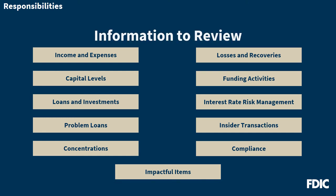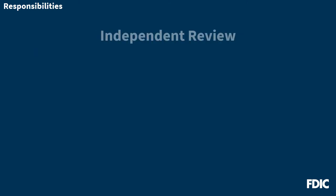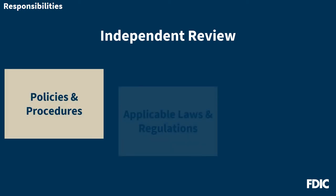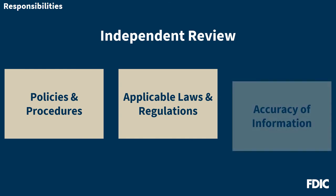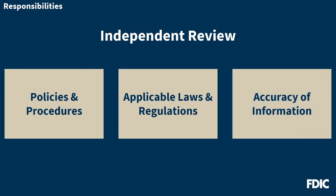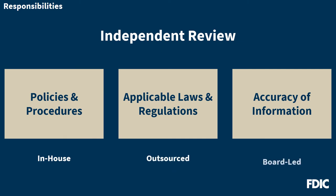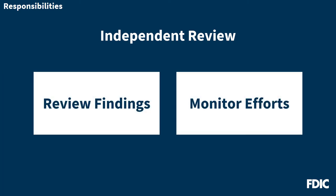Reports need to be provided far enough in advance of board or committee meetings to allow for meaningful review. Further, the board establishes a process for independent review and testing of compliance with policies and procedures and applicable laws and regulations. These reviews typically also cover the accuracy of information provided by management. They can be done by an in-house internal auditor reporting directly to the board, an outsourced party, or by an examining committee of the board itself. The board would review the independent party's findings with management and monitor management's efforts to resolve any identified problems.